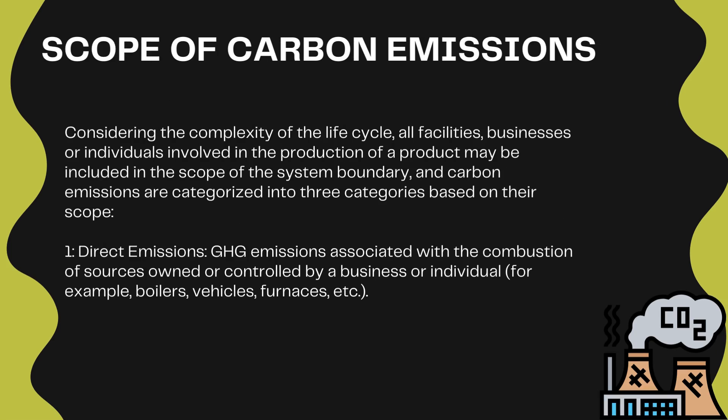Scope of carbon emissions. Considering the complexity of the life cycle, all facilities, businesses, or individuals involved in the production of a product may be included in the scope of the system boundary, and carbon emissions are categorized into three categories based on their scope. 1. Direct emissions: GHG emissions associated with the combustion of sources owned or controlled by a business or individual — for example, boilers, vehicles, furnaces, etc.